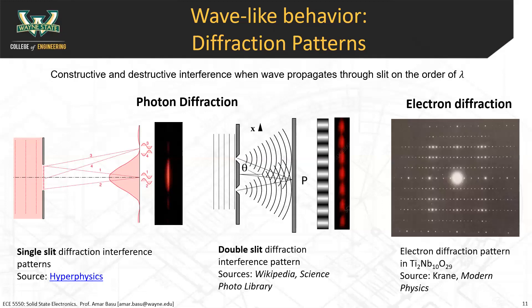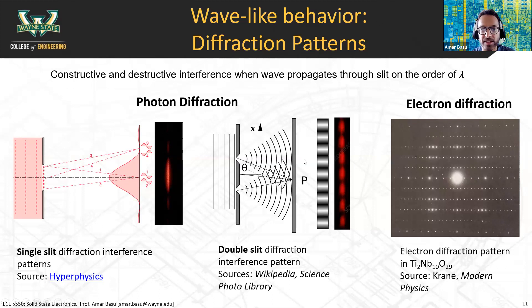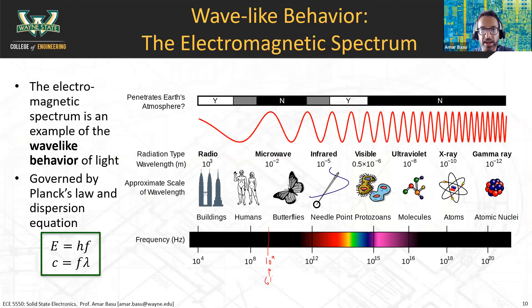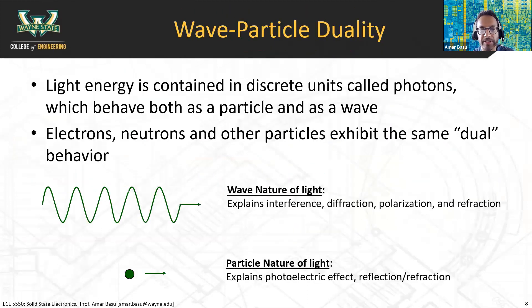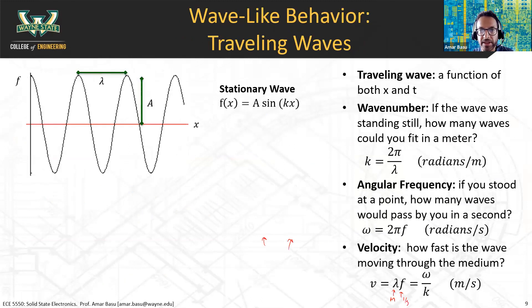Just to do the quick recap: we started talking about the Bohr model of the atom and then this concept of wave-particle duality. There are some aspects of light and the behavior of electrons, neutrons, and other particles - sometimes they behave like a wave, sometimes they behave like a particle. So there's this concept of wave-particle duality.